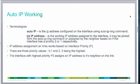Auto IP address assignment is based on priorities. The interface on the link which has the highest priority, which is 2, will assign the IP address to the interface which has the lowest priority, which is 0.